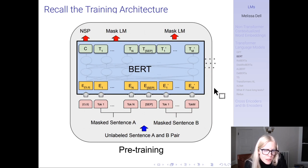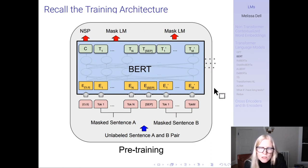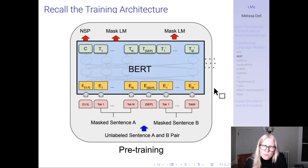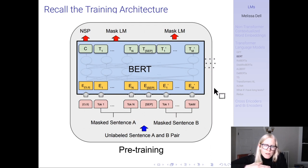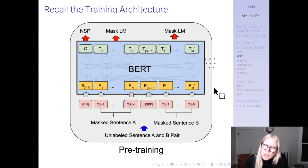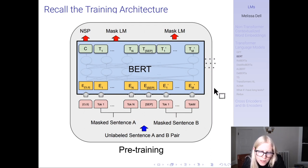Here's how tokens are input at training. We need position embeddings because everything is fed in at once and we need to track order. They also feed in segment embeddings because they're feeding in two sentences at a time, plus the token embeddings — and you add all of those up to get the input. You have masked sentence A and masked sentence B passing through multiple encoder blocks, and at the last layer you get contextualized representations of each token.